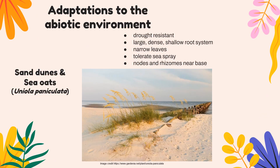Our first example is the sea oat plant, which lives on sandy sand dunes. Sea oats have evolved to become quite drought resistant — they do this by having large, dense, and shallow root systems. That shallow, large root system allows them to absorb lots of water very effectively while it's raining, since sand is not very good at holding water the way clay soil might.